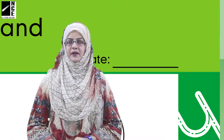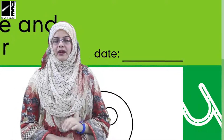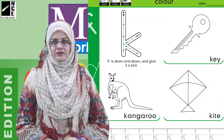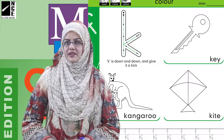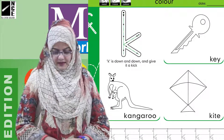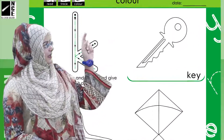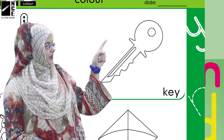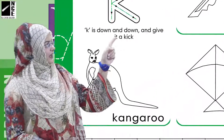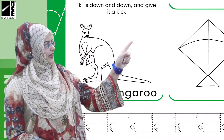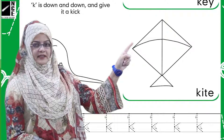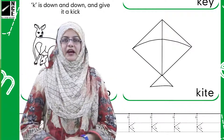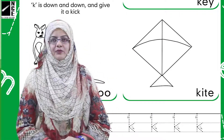What are we going to do? We have some pictures on the page. We will see which pictures we have. We have a key, a kangaroo, and a kite.